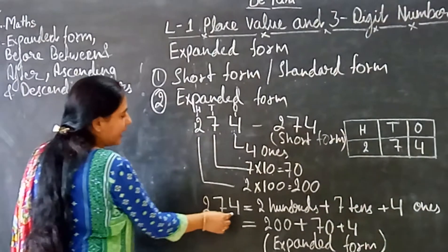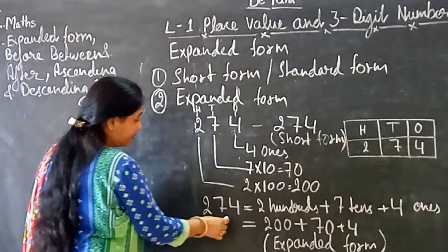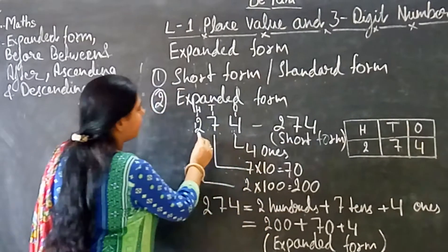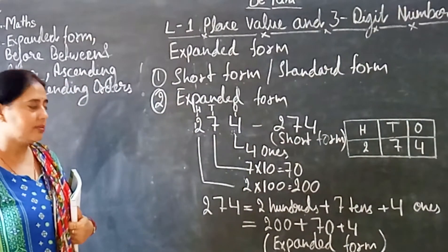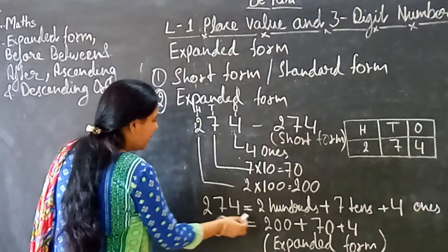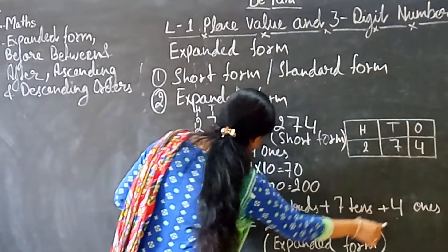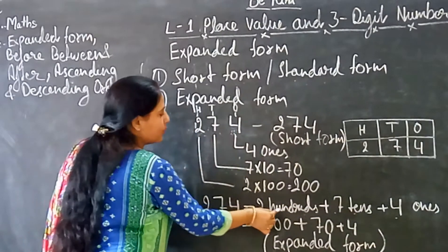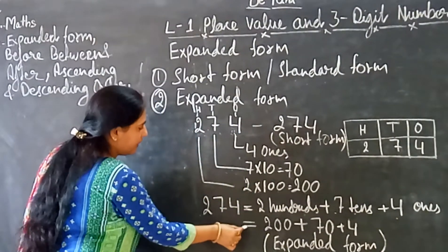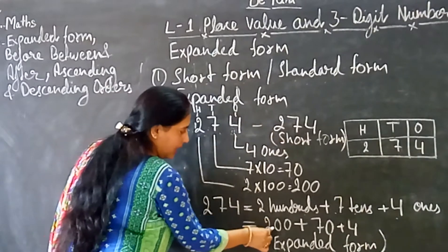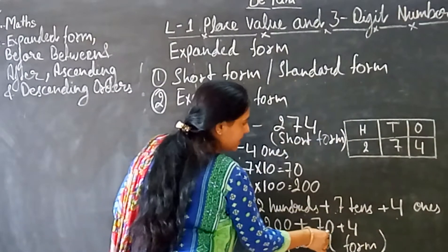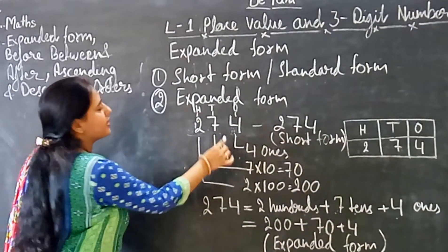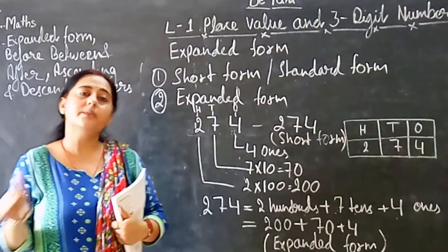So, how we will write in expanded form? First, we will write place value of each digit of given number. Understand? So place value of 4 is 4, place value of 7 is 70, place value of 2 is 200. So we will write like that: 200 plus 70 plus 4. This is the expanded form of given 3 digit numbers. What it means?